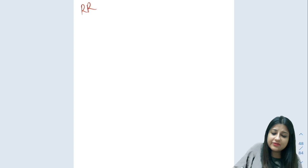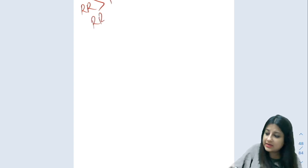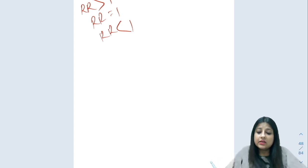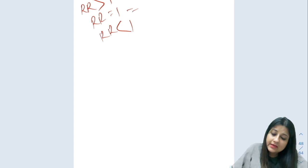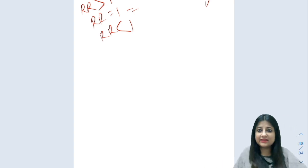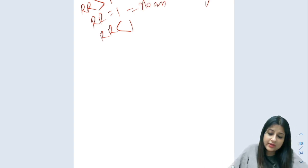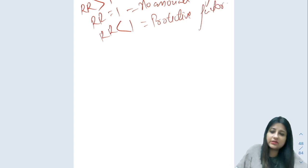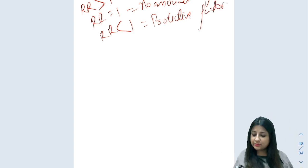Relative risk can be more than one, equal to one, or less than one. For smoking and lung cancer: if relative risk is more than one, it means a positive association or risk factor; equal to one means no association — whether you do or don't do that thing, it has nothing to do with the outcome; less than one means a protective factor or inverse association.